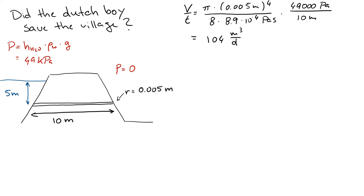For reference, this comes out to approximately 0.08 acre-feet per day, which does not seem to be enough water to have flooded the village. So if this is all the hole that was in the dike, there was not really a need for the little Dutch boy to plug the hole to save the village.